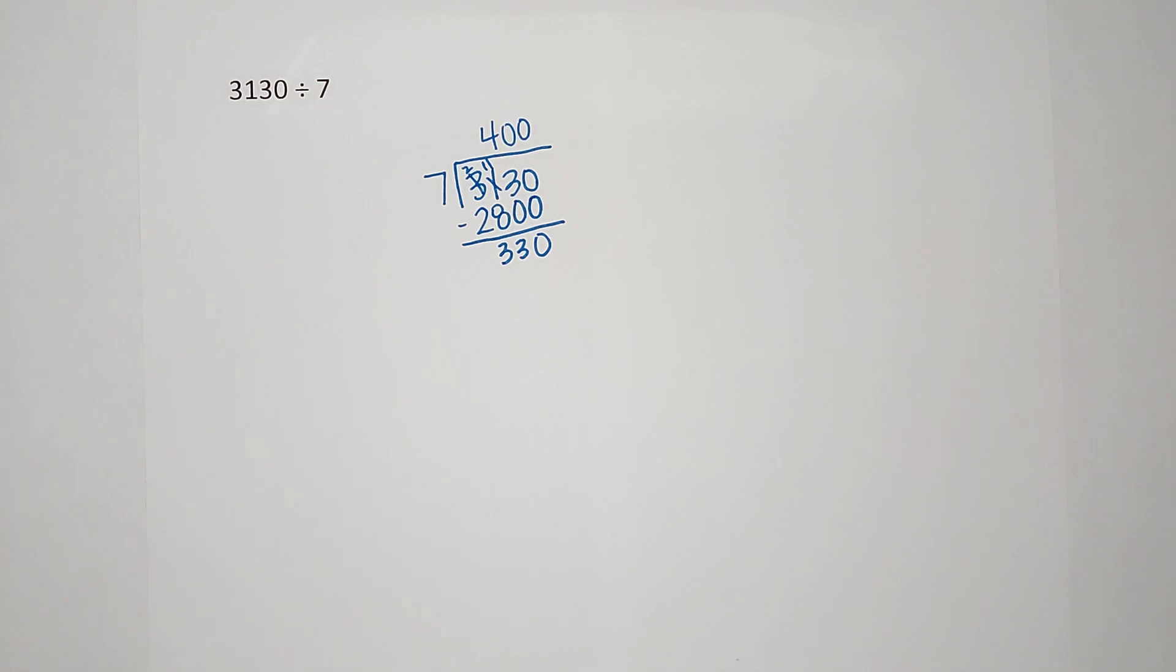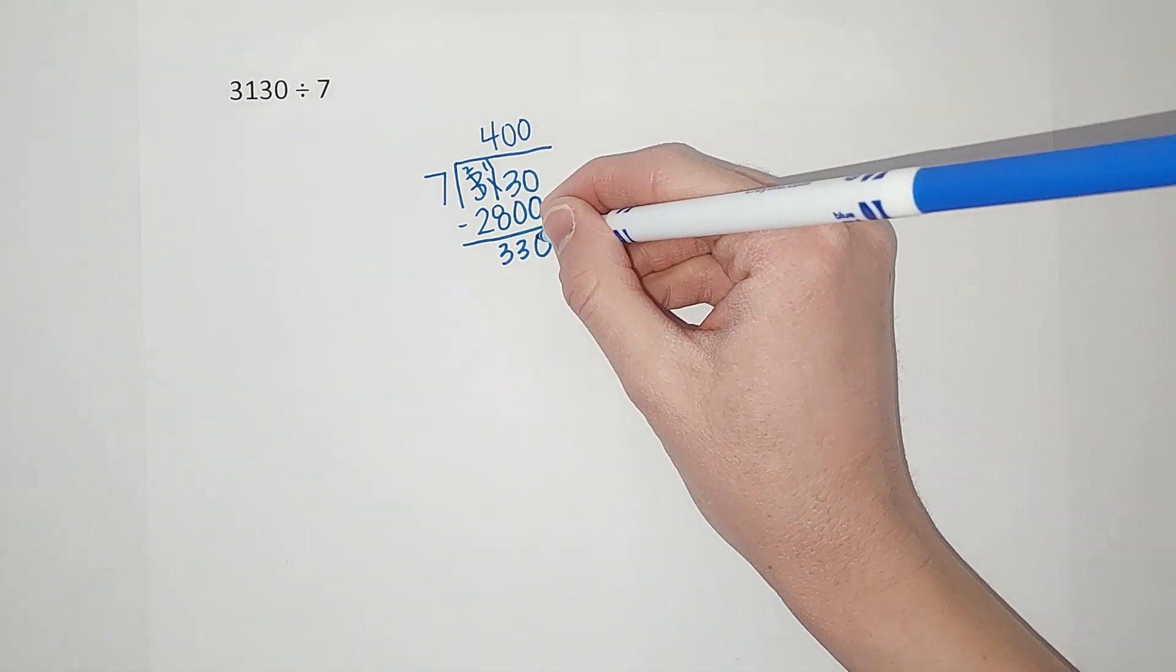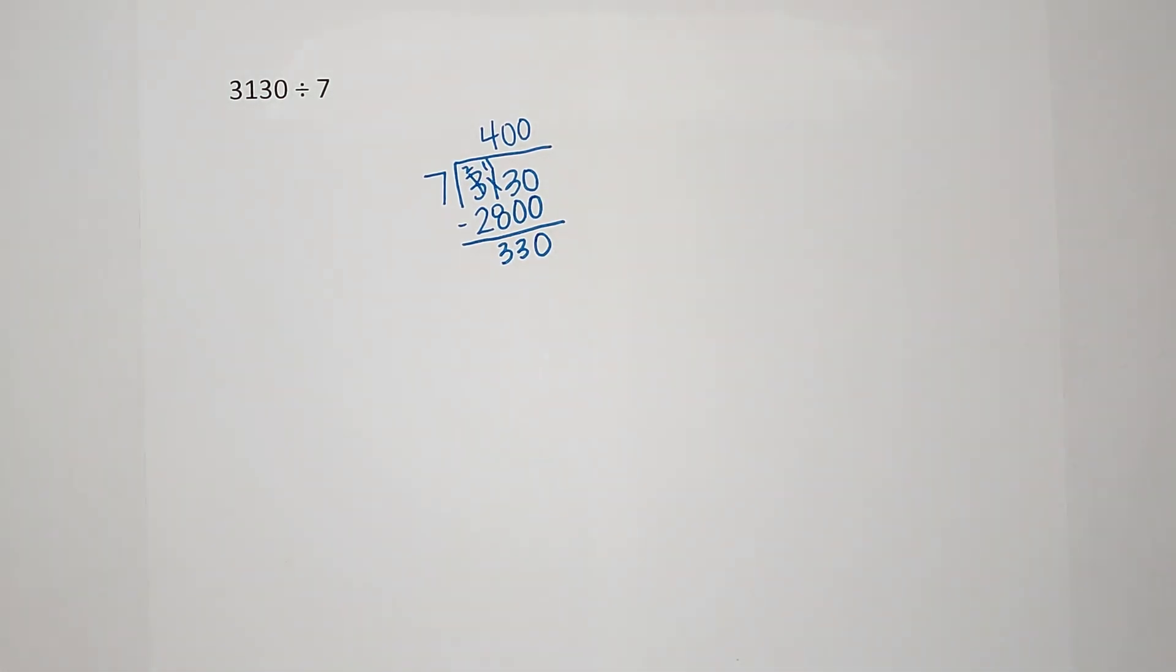Okay, so seven times 10 is 70. That's a bit too small. Seven times 50 would give me 350, right? So that's a little too big but getting close. What about seven times 40? That would give me 280, so let's try that.